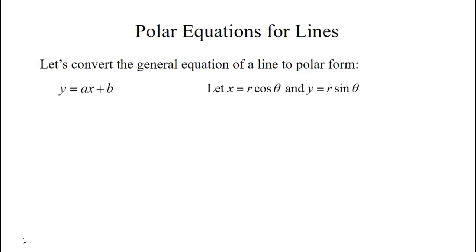Let's start with the general equation of a line. We have y equals ax plus b where a is the slope and b is the y-intercept.